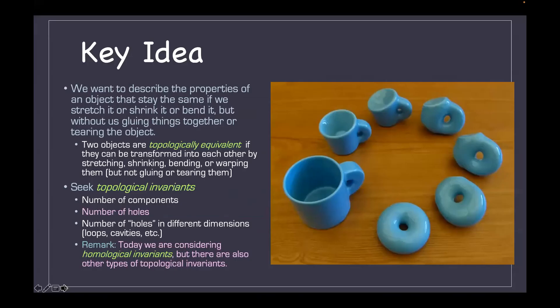Algebraic topology is the key underlying mathematical subject. We want to describe properties of an object that stay the same when we stretch, shrink, or bend it — but we're not allowed to glue things together or tear it. Two objects are topologically equivalent if you can transform one into the other in this way. We seek topological invariants: number of components, number of holes in different dimensions. Technically these are called homological invariants, but there are also other types of topological invariants.